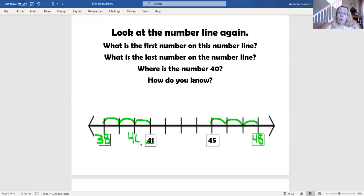How do I know? Well, I know because I counted. And I know because 40 is one less than 41. So it's just one space behind 41 on the number line.